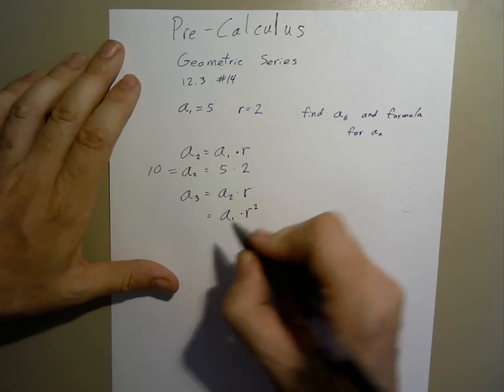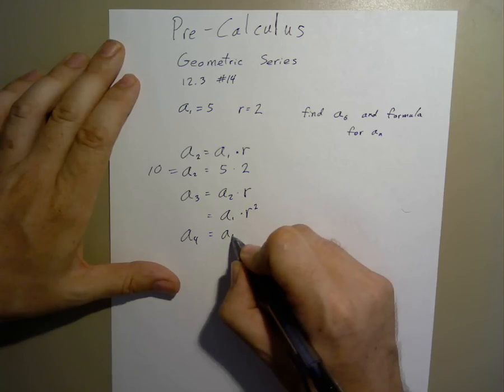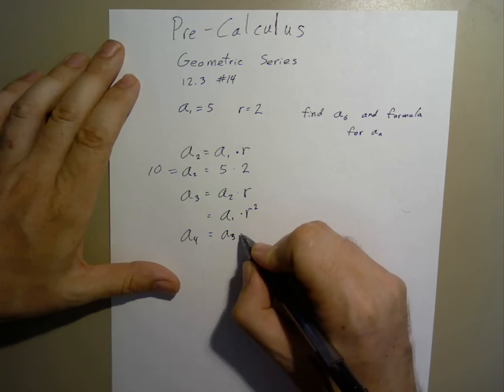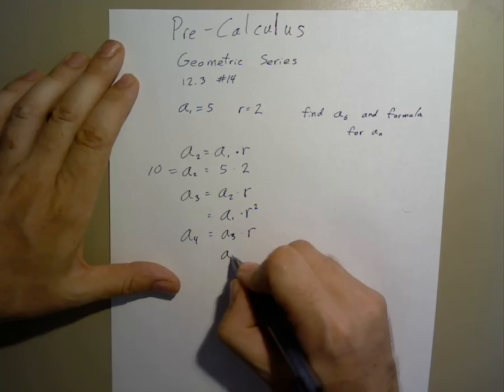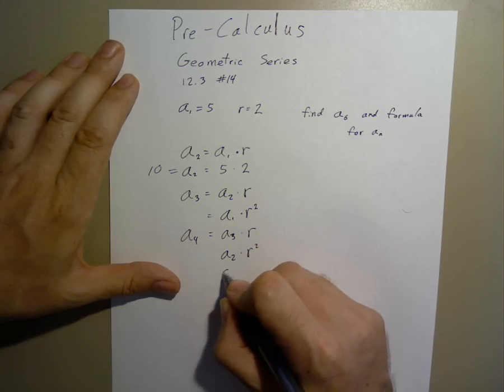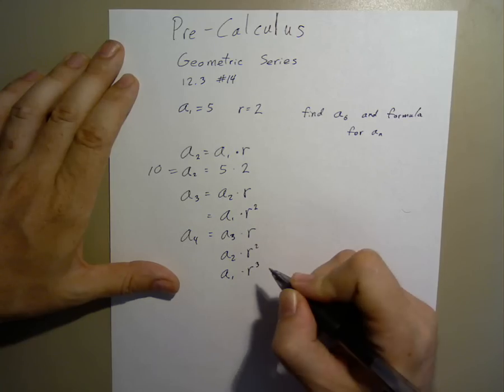Now we can continue this. A4 is a3 times r, which is a2 times r squared, or a1 times r cubed.